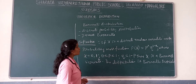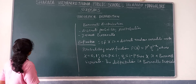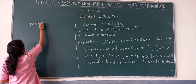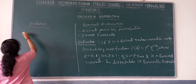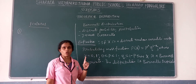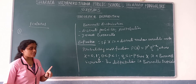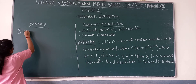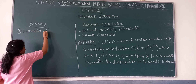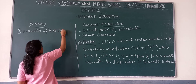We will see what are the features of the Bernoulli distribution. The first feature: the Bernoulli distribution has only one constant — that is, one parameter. The parameter of Bernoulli distribution is P.